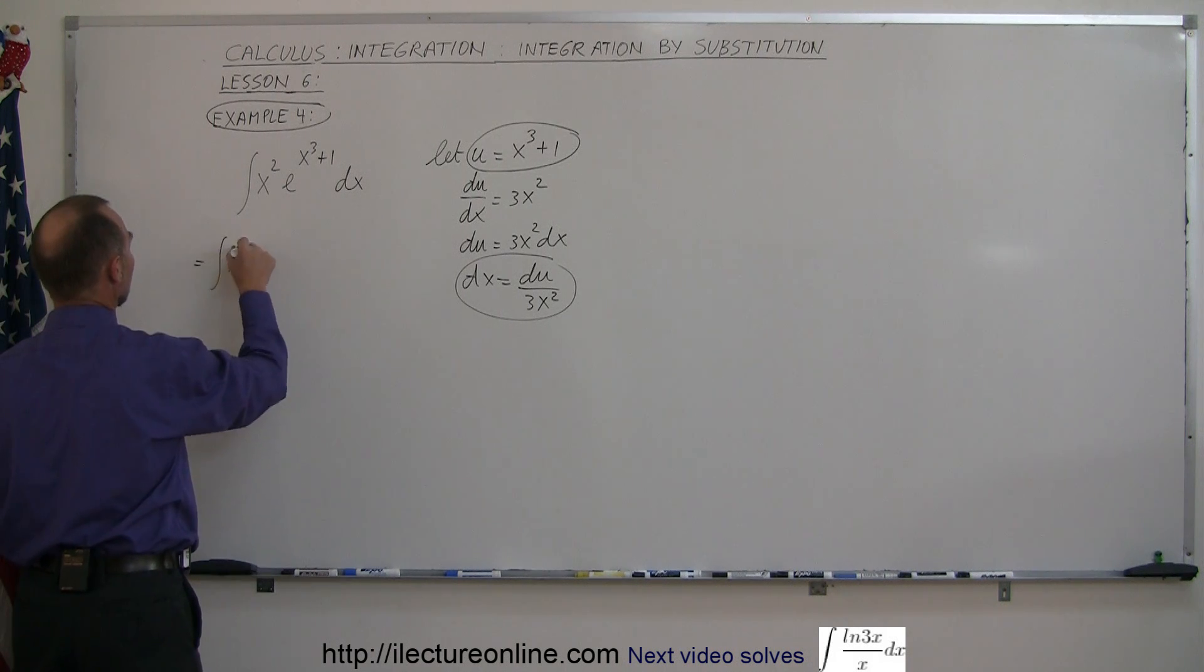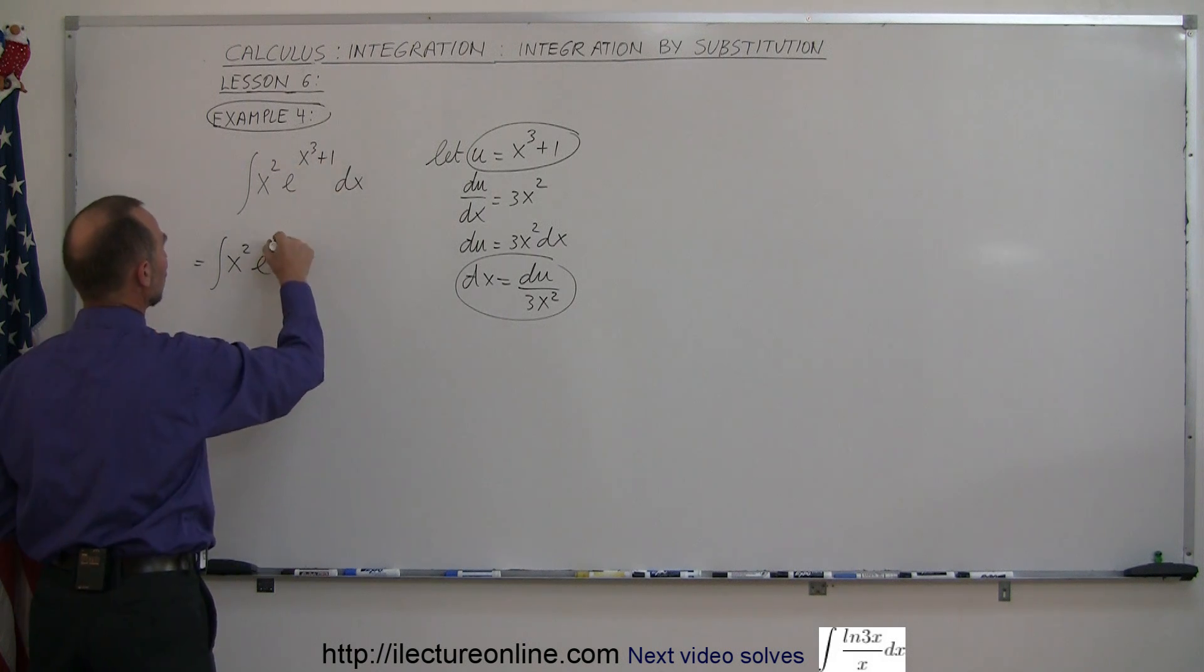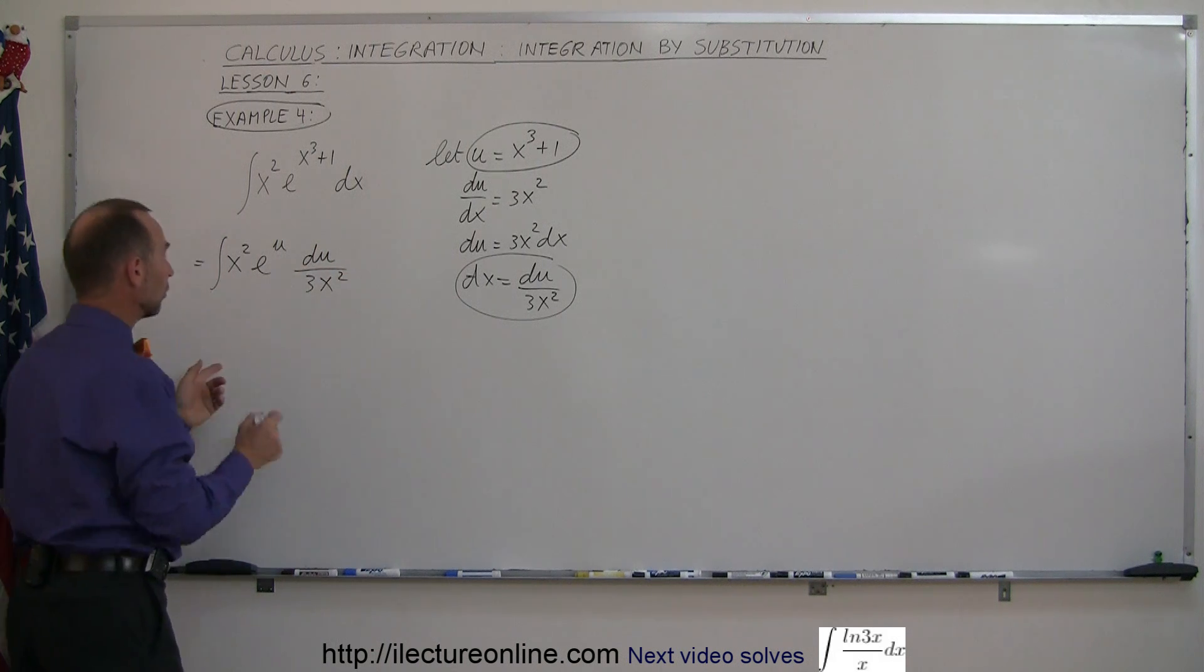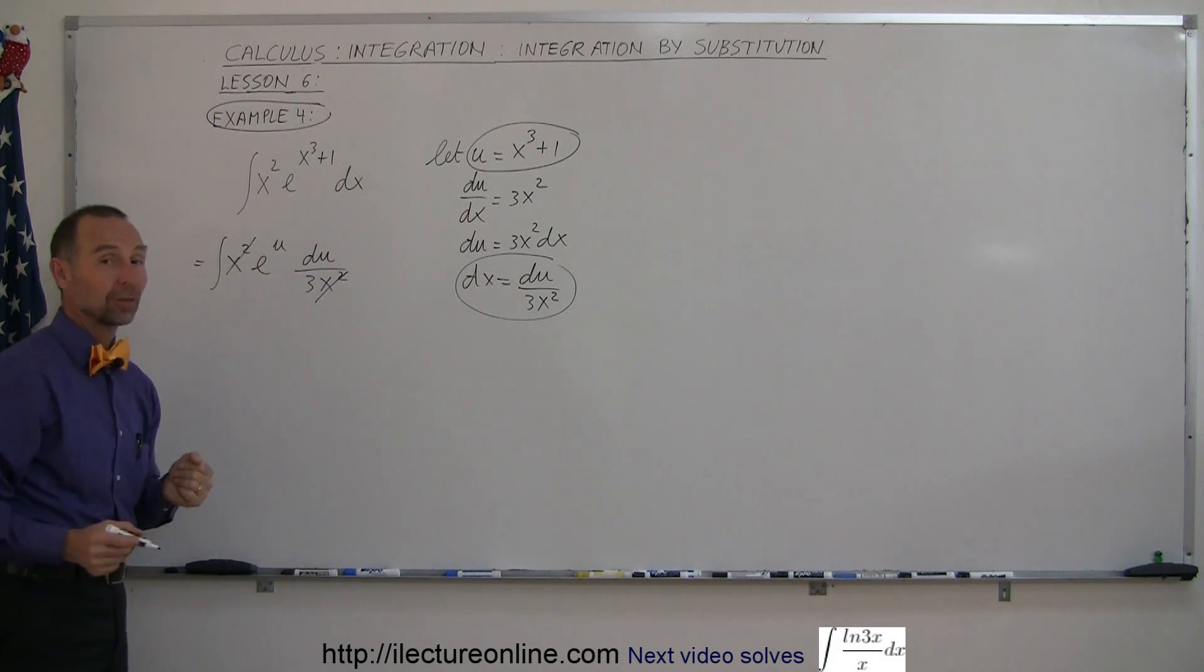So this is equal to the integral of x squared times e to the, instead of x cubed plus 1, you write u, and instead of dx, you write du divided by 3x squared. And then notice, this x squared cancels out with this x squared, and all you have then is e to the u du divided by 3.